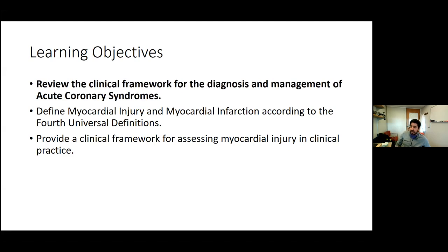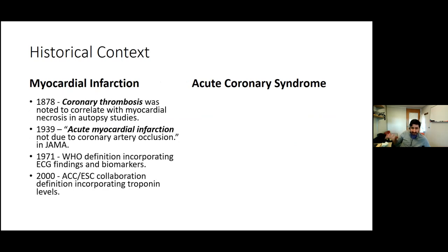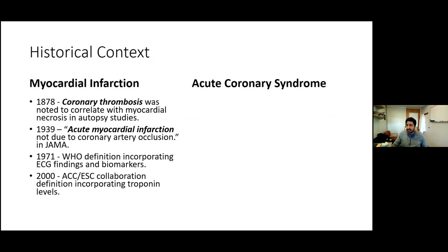The learning objectives: talk about the diagnosis and management of acute coronary syndrome — still a very important thing to reemphasize as the bedrock use of troponin in evaluating a patient coming in with symptoms consistent with acute coronary obstruction. Then discuss the fourth universal definition of myocardial injury and infarction, and provide a clinical framework for assessing somebody with myocardial injury who doesn't fall into the ACS pathway.